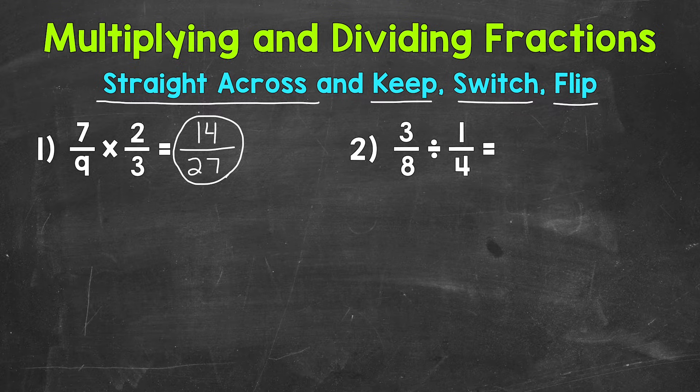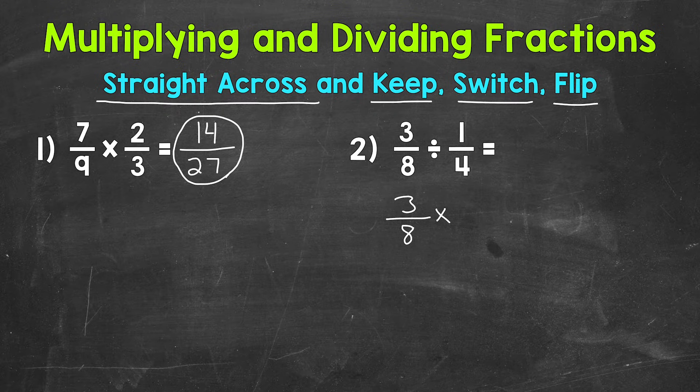So I'm going to rewrite the problem using these steps. Keep—always keep your first fraction, so three-eighths. Then our next step is switch. We are going to switch from division to multiplication. Multiplication is the opposite of division. So our last step is flip. We are going to flip our second fraction.